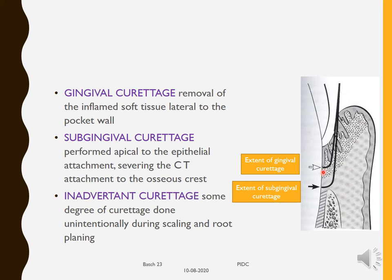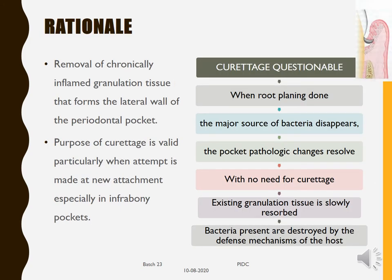There are three types of curettage. First is gingival curettage, where there is removal of only the inflamed soft tissue lateral to the pocket wall. The second, subgingival curettage, is performed slightly apical to the epithelial attachment, severing the connective tissue attachment to the osseous crest below — so it goes a little further down than gingival curettage. The third type is inadvertent curettage.